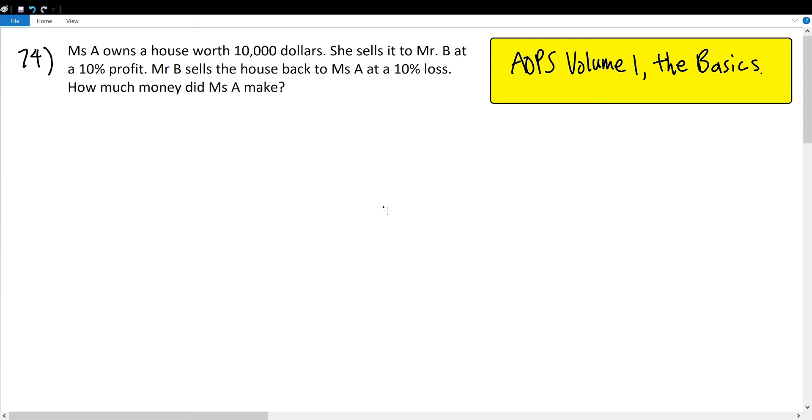AOPS Volume 1, the basics, number 74. Miss A owns a house worth $10,000. She sells it to Mr. B at a 10% profit. Mr. B sells the house back to Miss A at a 10% loss. How much money did Miss A make?